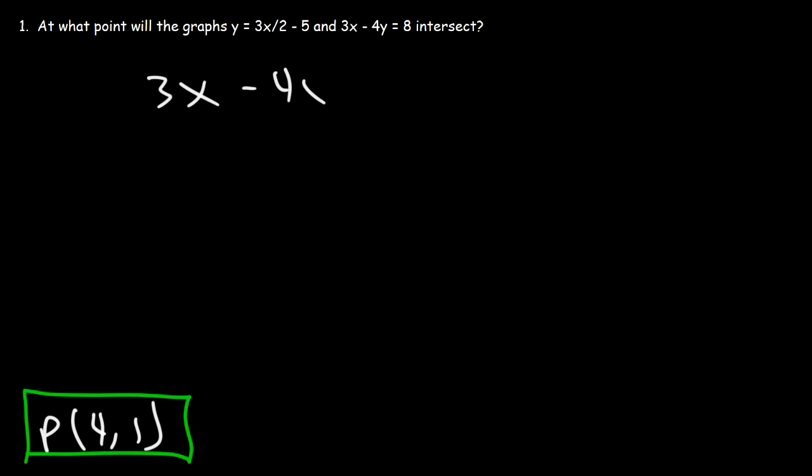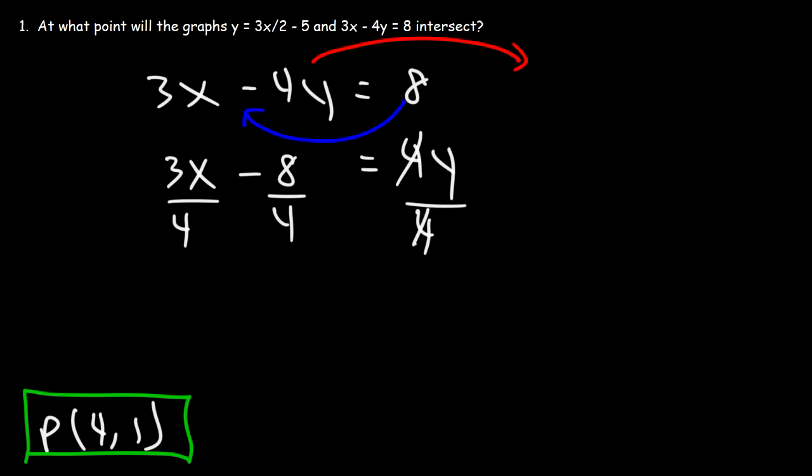So first I'm going to rewrite it. I'm going to move the negative 4y from the left side to the right side. On the left side, it's negative, but on the right side, it's going to be positive. Now I'm going to take the 8 and move it to this side. 8 is positive on the right, but it's going to be negative on the left. Now to get y by itself, I'm going to divide every term by 4. So it's 3 over 4x. 8 divided by 4 is 2, and that's equal to y. So basically we can write it as y is equal to 3 over 4x minus 2.